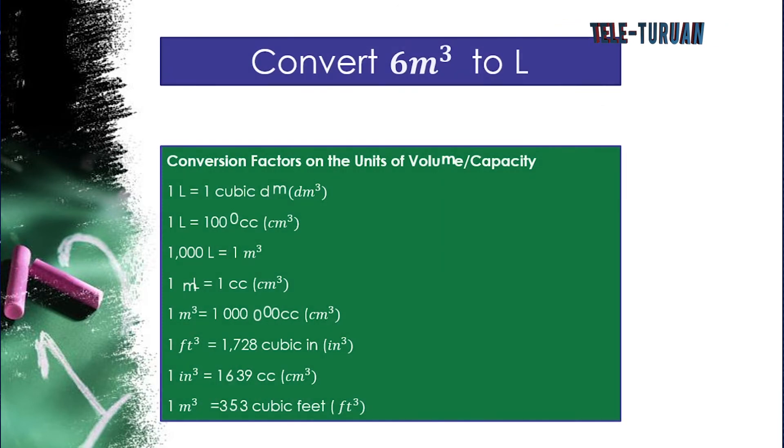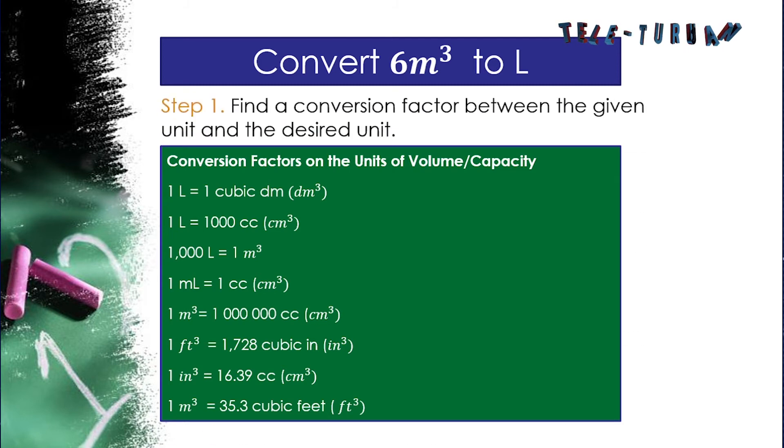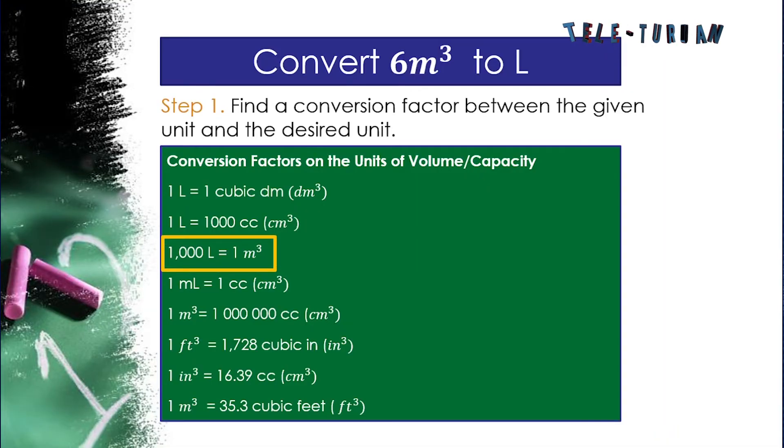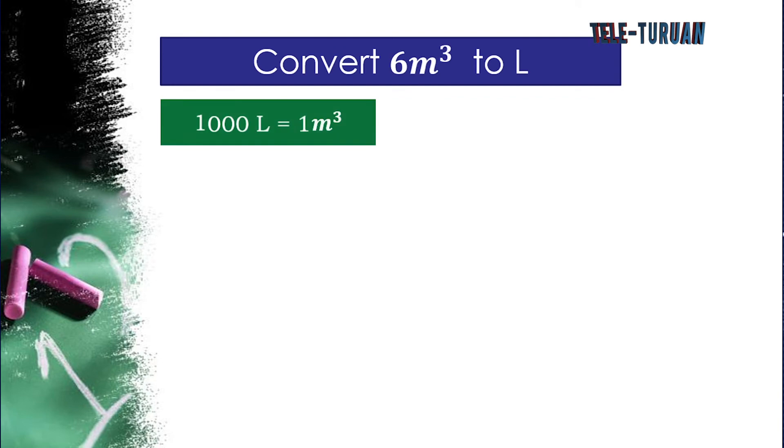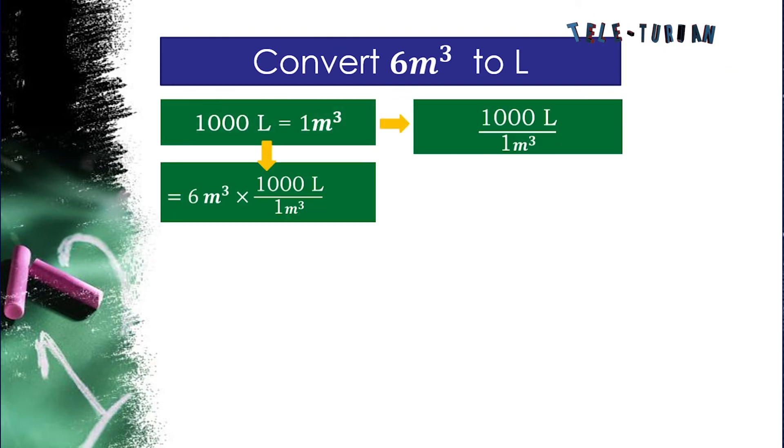And for the last, we have convert 6 cubic meter to liter. First, find the conversion factor between the given unit and the desired unit. What is our desired unit? Okay, liter. So following the steps, 6 cubic meter multiplied by 1,000 liter over 1 cubic meter. Cancel out cubic meter.